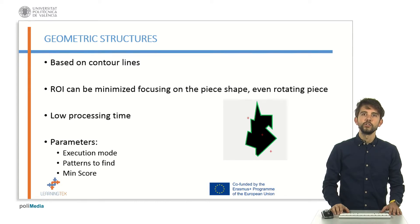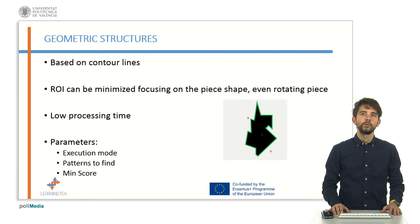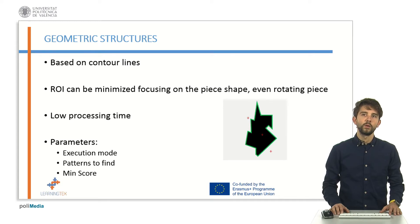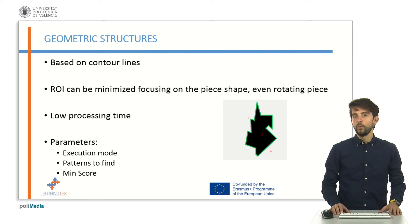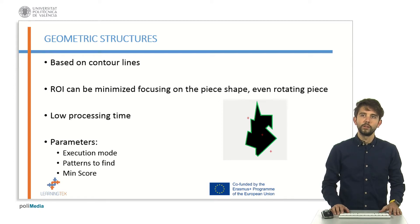Geometric structures is a pattern search based on contour lines. The system makes a contour extraction and memorizes the outlines. The main advantage is that the system can work only with the lines and the processing time is reduced. Once the object is detected, the ROI can be reduced and the system focuses on the piece we want to locate.